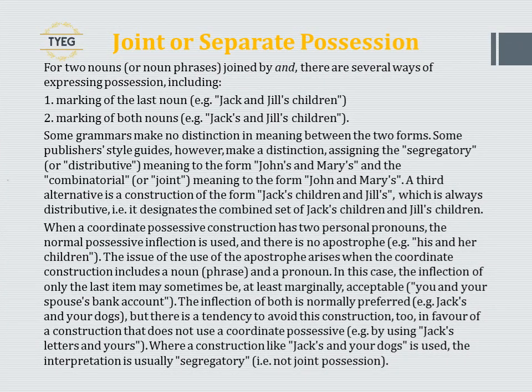For two nouns or noun phrases joined by 'and', there are several ways of expressing possession: marking only the last noun (e.g., 'Jack and Jill's children') or marking both nouns (e.g., 'Jack's and Jill's children'). Some style guides make a distinction, assigning segregatory meaning to 'John's and Mary's' and combinatorial meaning to 'John and Mary's'. A third alternative, 'Jack's children and Jill's', is always distributive — it designates the combined set of Jack's children and Jill's children.